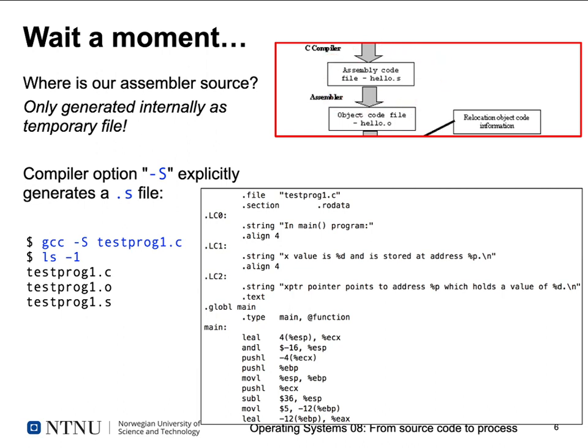We said our C compiler actually generates assembler source code, and this is then translated to the object file. But where is our assembler source code? We listed the directory and only saw the C source file and the object file — no assembler source file. That's because the assembler source code, if generated at all, is only created internally as a temporary file — usually just in RAM between the compiler and assembler — so you won't see it in your directory.